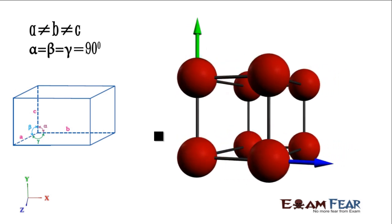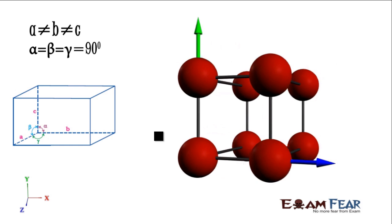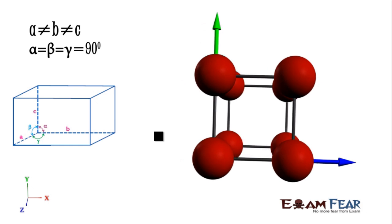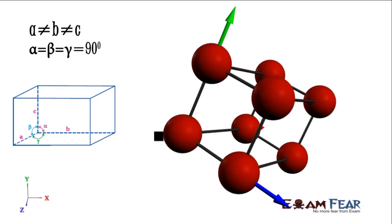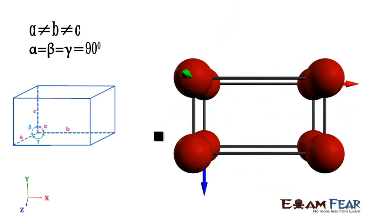The next is orthorhombic. In orthorhombic, all the sides are unequal — A is not equal to B, is not equal to C — but all the angles are equal at 90 degrees. We have all four different kinds of packing. The first is the simple one where all the atoms are only on the corners.